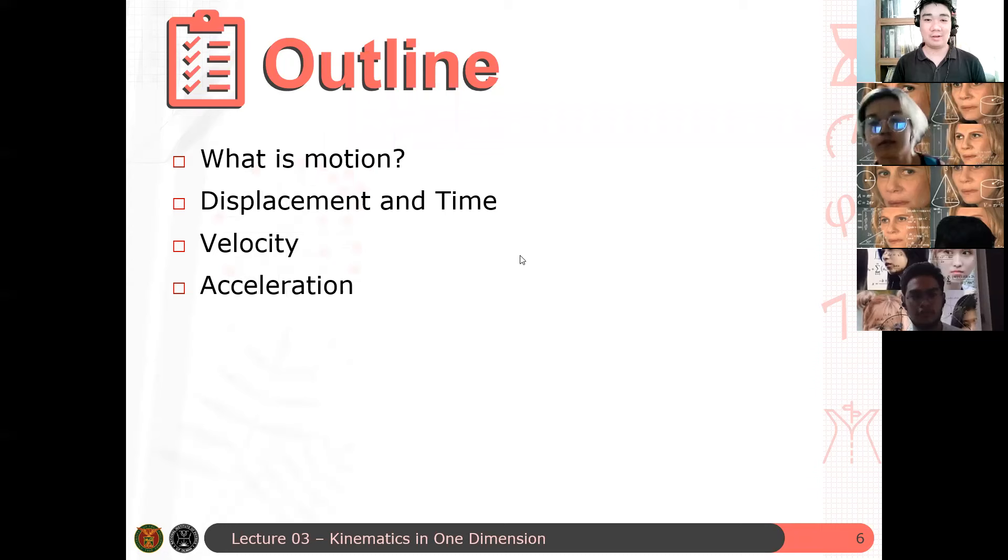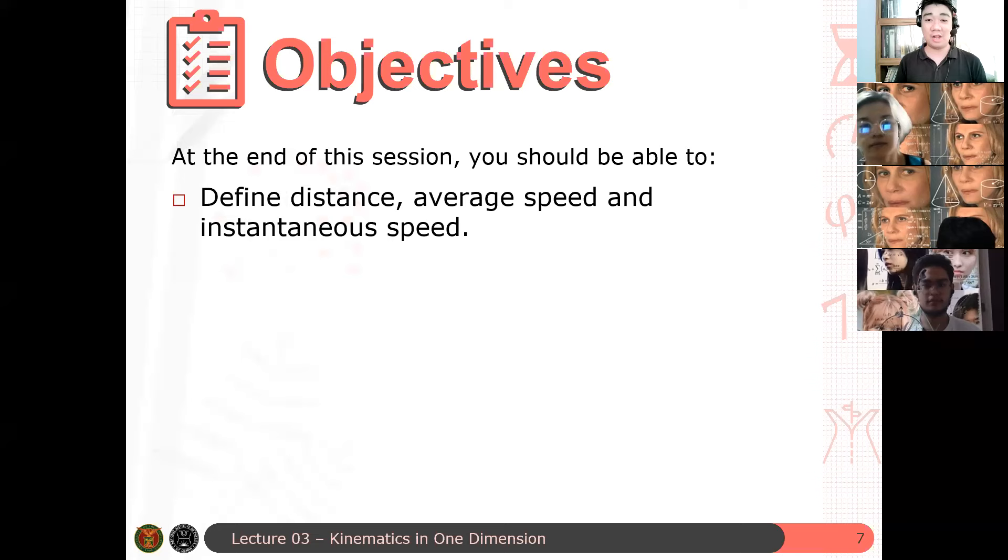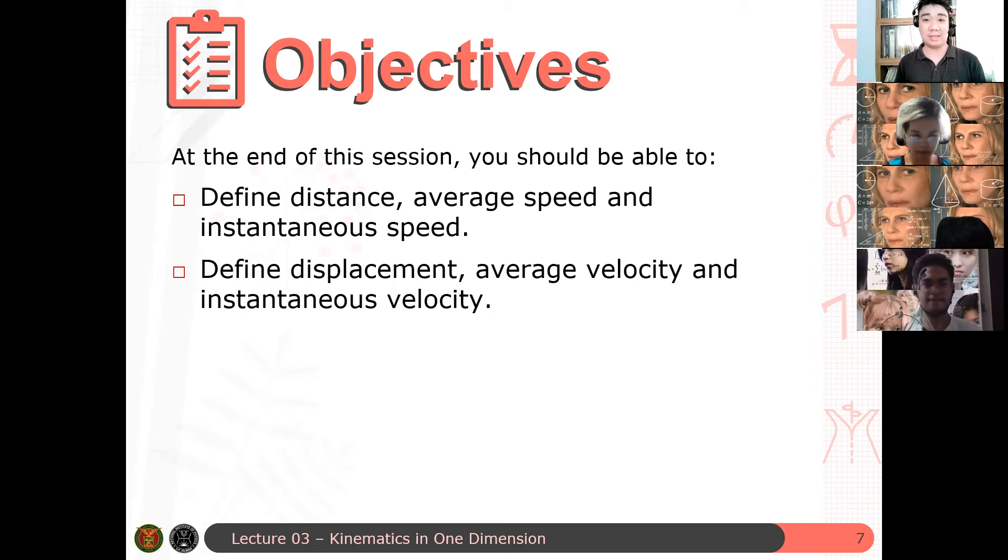Here are the objectives of this discussion. At the end of this session, you should be able to have the following, to understand the following. First, define distance, average speed, and instantaneous speed. And then second, we define displacement, average velocity, and instantaneous velocity.